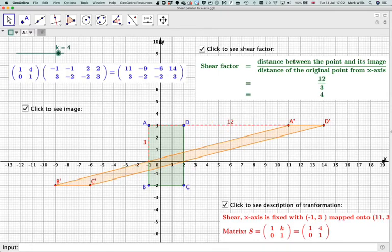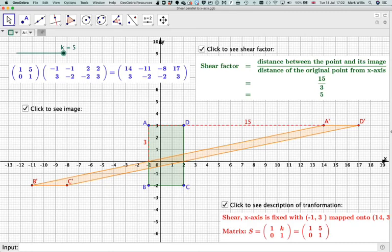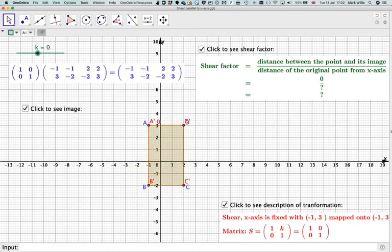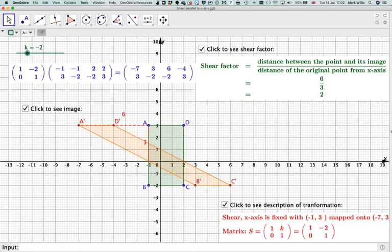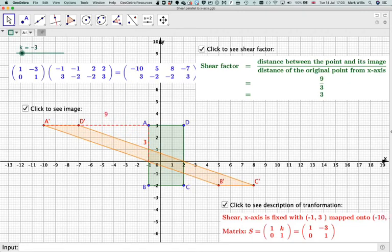And you can see that those will change. If we were to make it negative, obviously what happens is the bottom bit goes to the right and the top bit goes to the left. And then obviously the shear factor is minus 3 in this case.